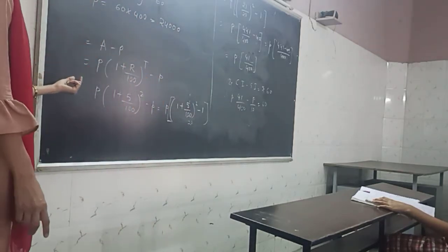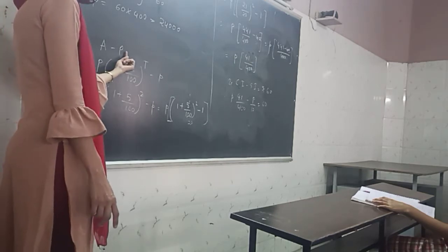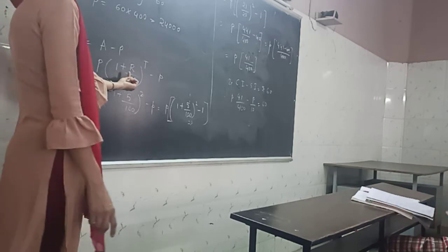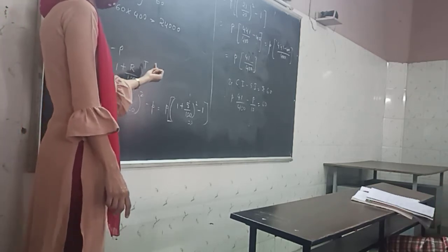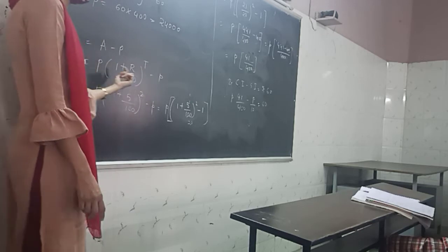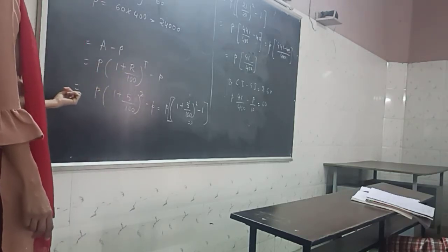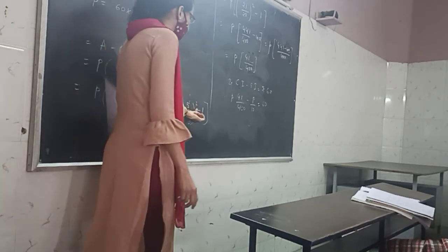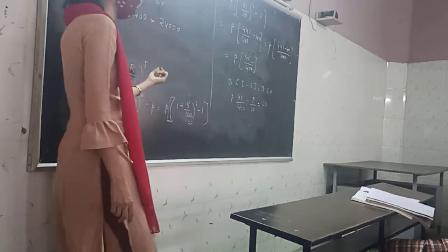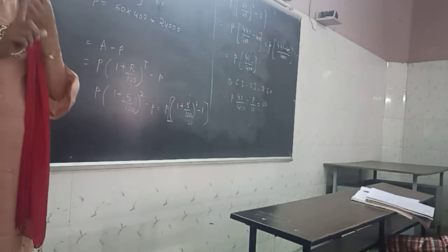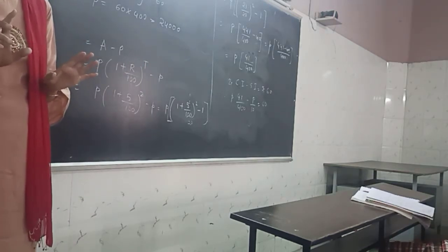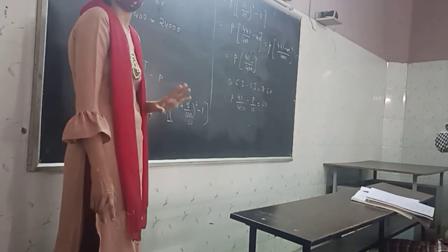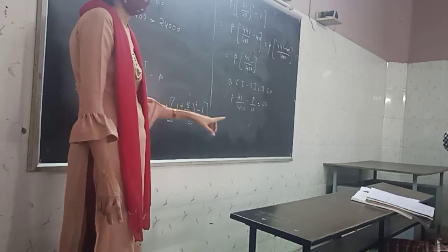Amount formula is P multiplied by 1, plus R by 100, raised to T, minus P. Take P common. So what did I get? P times (1 plus 5 by 100, raised to 2, minus 1). See, P is common. 1 is there because P multiplied by 1 is P. Minus, zero is not there, so 1 is there. Minus 1.